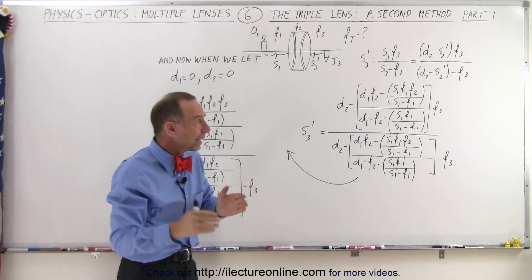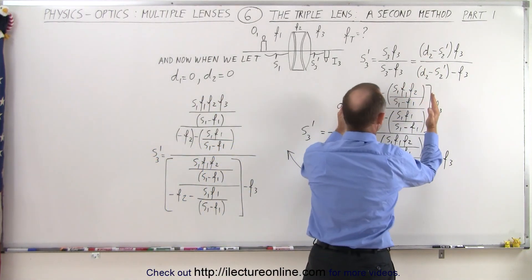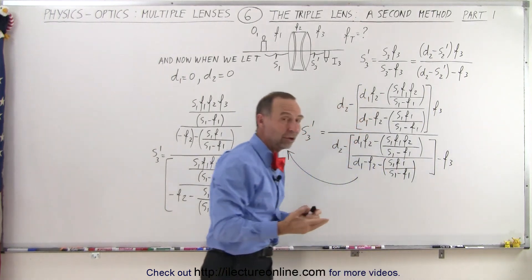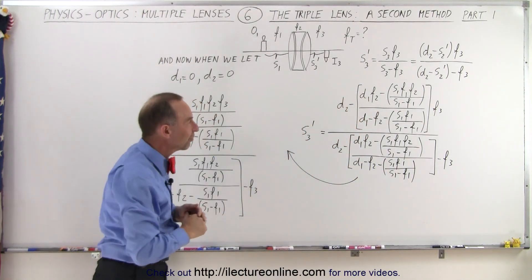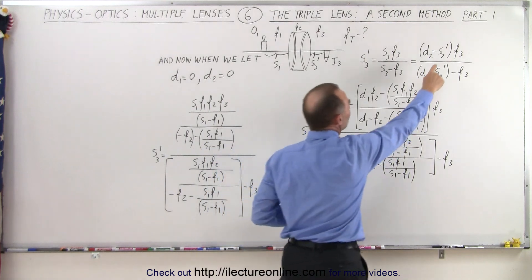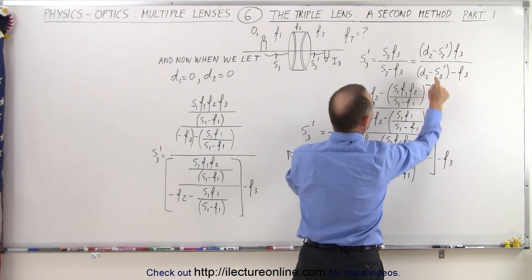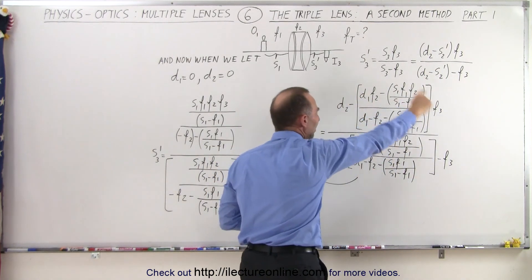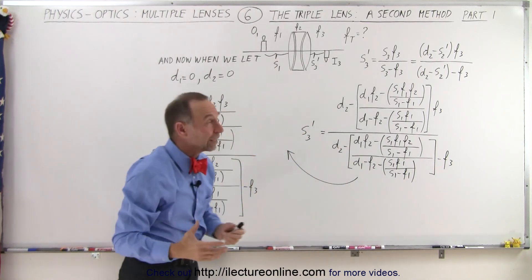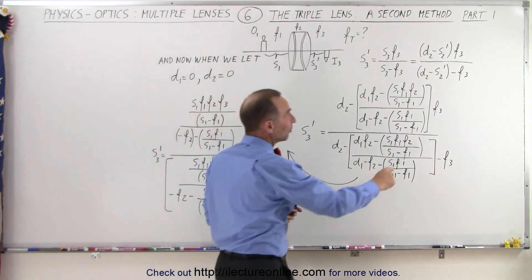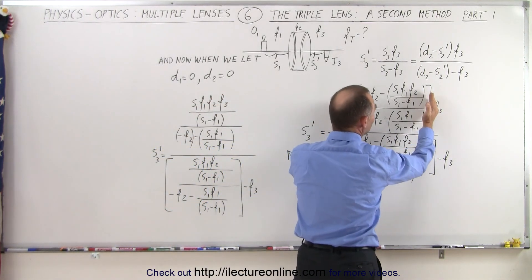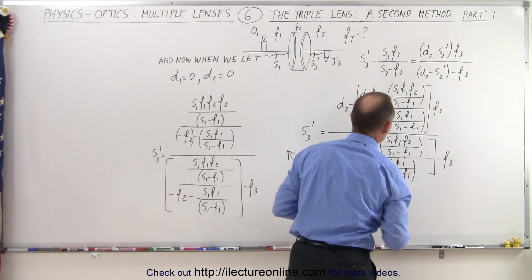Now we're going to replace S2 prime by this quantity inside the brackets here, which we obtained at a previous video. So when we do that, when we replace S2 prime by this quantity here, and we do it again in the denominator, we end up with this rather complicated equation. Notice the difference here that F3 is multiplied by this, and here F3 subtracted from that.